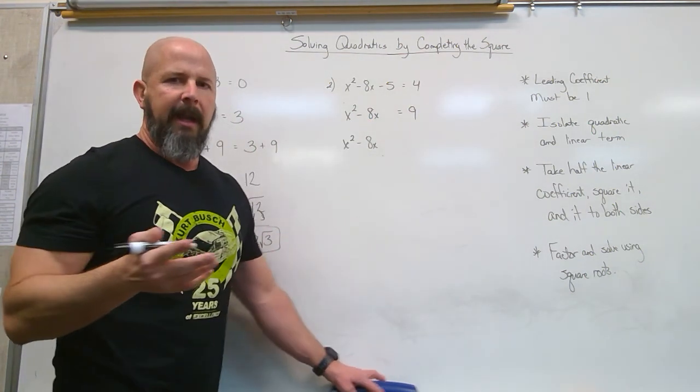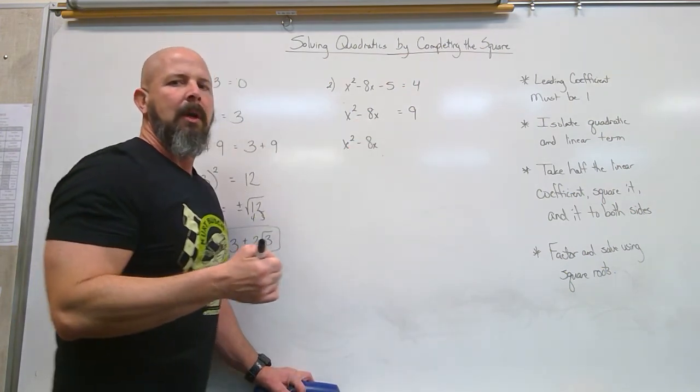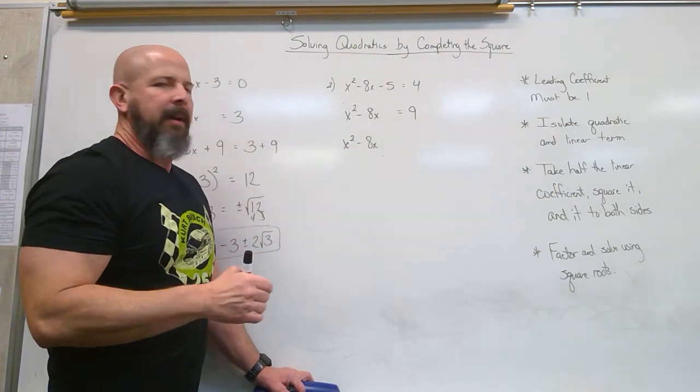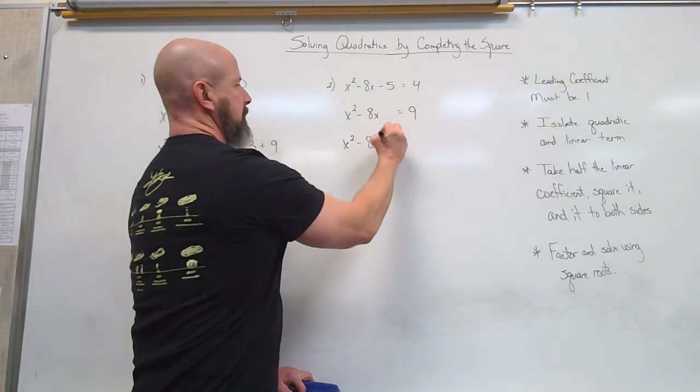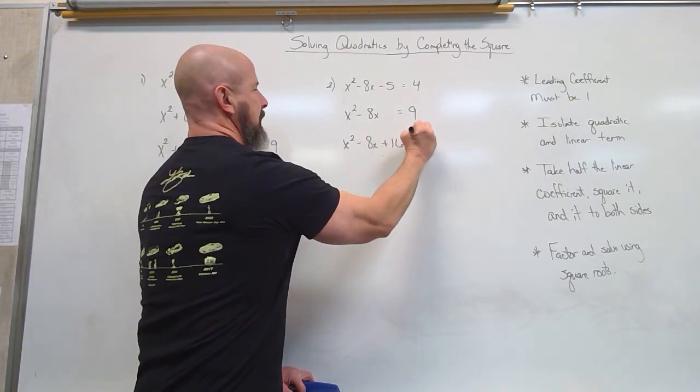Now, I know when you take half of negative 8, it's negative 4. But we're squaring it, so it doesn't matter. Negative 4 squared is still 16. So we're going to be adding 16 to both sides.